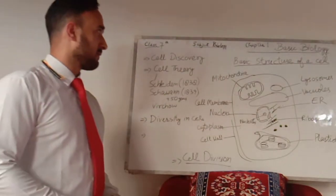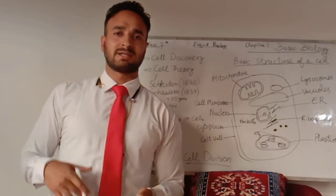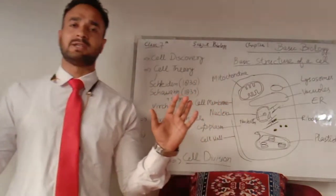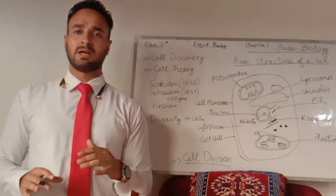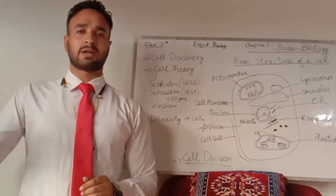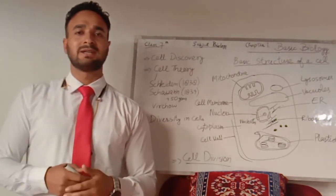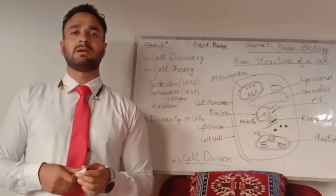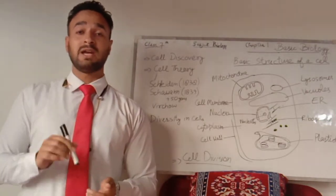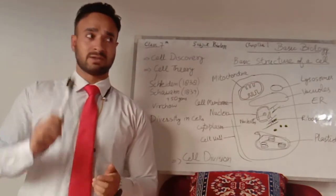All living organisms — whether plants, animals, birds, insects, whatever living organisms you find on the surface of the earth — are made up of cells. So we can say that the cell is the basic structural and functional unit of life, because all living organisms are made up of cells.